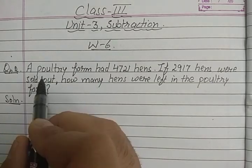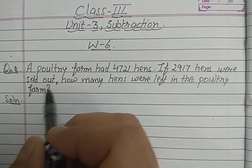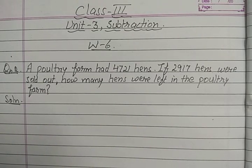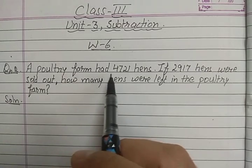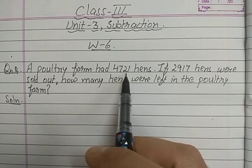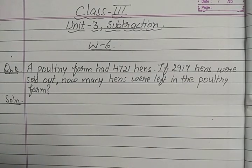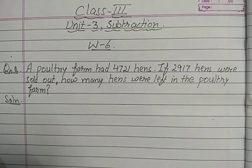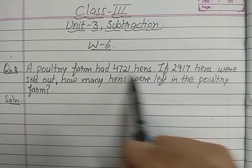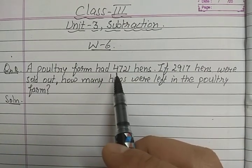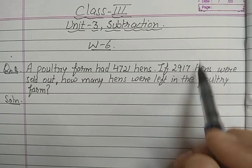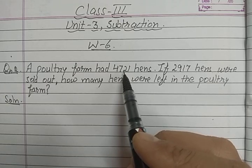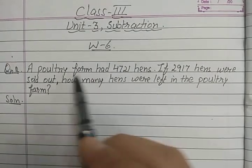Solution. First, we write the statement. We write what is given first. Here, a poultry farm had 4721 hens — so 4721 is the total number of hens. There are two things given: 4721 and 2917. We write what each number represents, taking the words from the question itself.